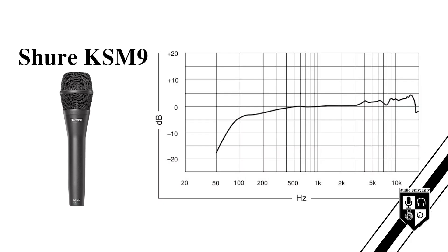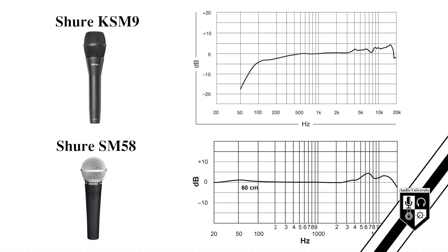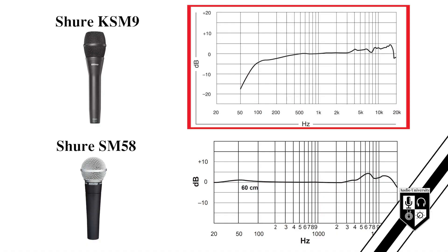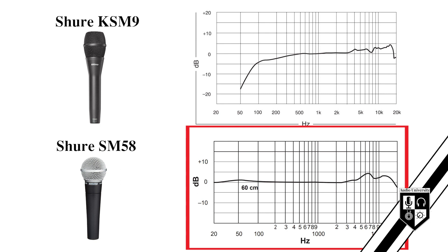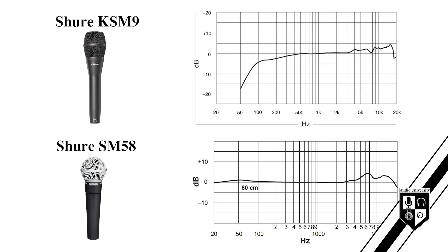Let's take a look at the frequency response graph for the Shure KSM9. Some frequencies are accentuated by this microphone, while other frequencies are reduced. Comparing the KSM9 to the Shure SM58, you can see that the KSM9 accentuates more high frequencies but reduces more low frequencies. This indicates that the KSM9 has a brighter sound, but the SM58 has a more accurate low frequency response.